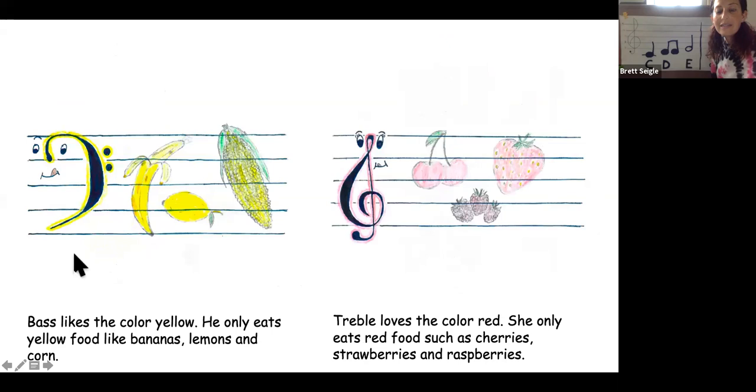Bass likes the color yellow. He only eats yellow food like bananas, lemons, and corn. Treble loves the color red. She only eats red food like cherries, strawberries, and raspberries.